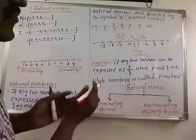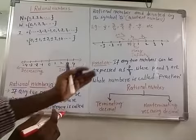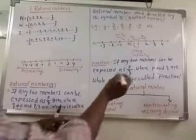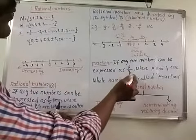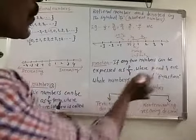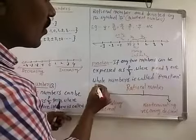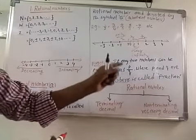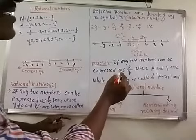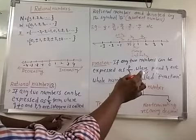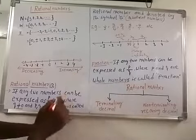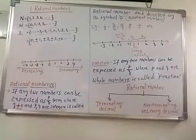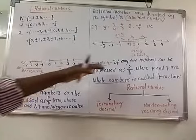Now, what is the difference between a rational number and a fraction? A fraction is defined as any number expressed as p/q where p and q are whole numbers. In a rational number, p and q are integers. That is the key difference between a rational number and a fraction.